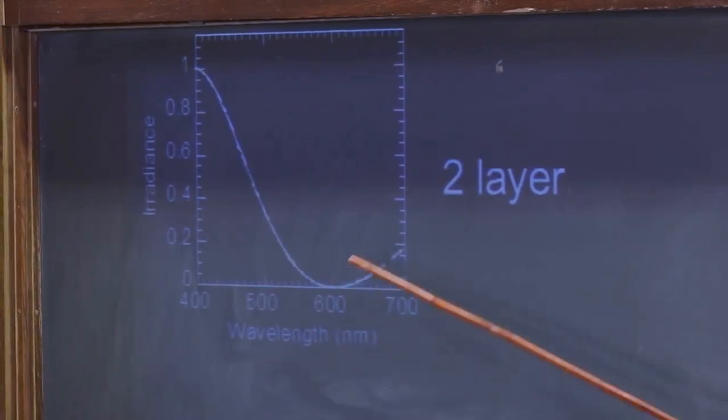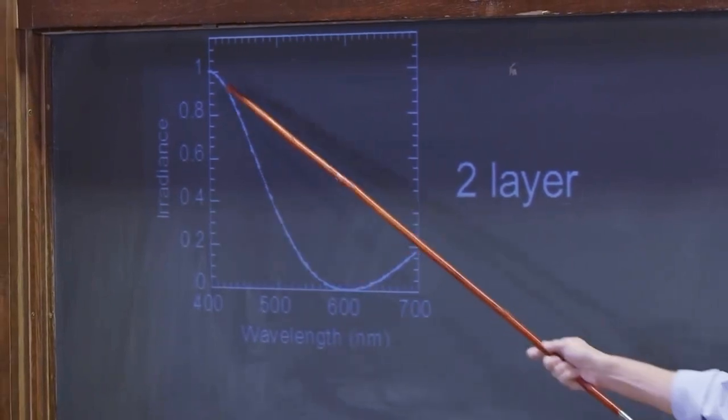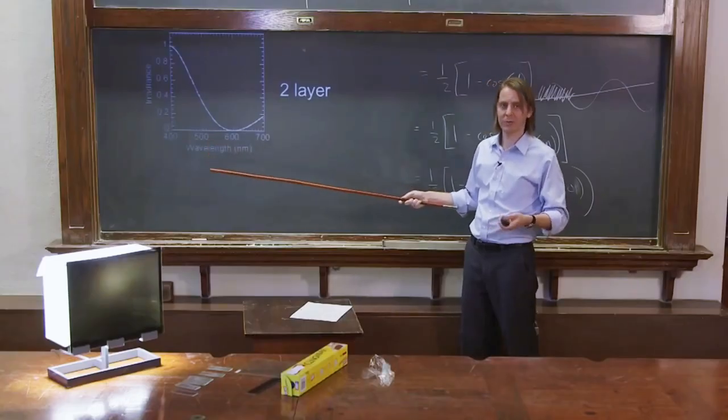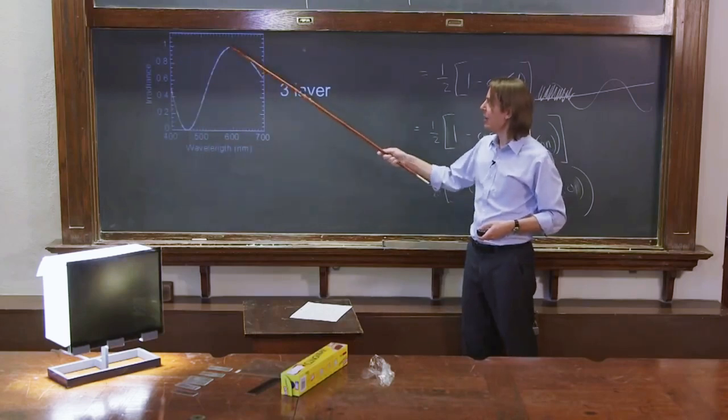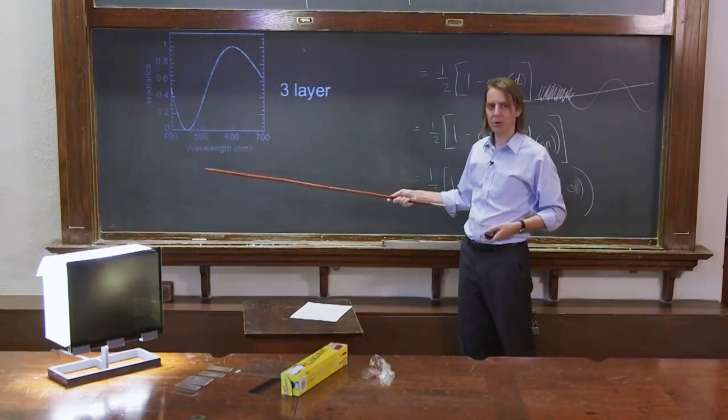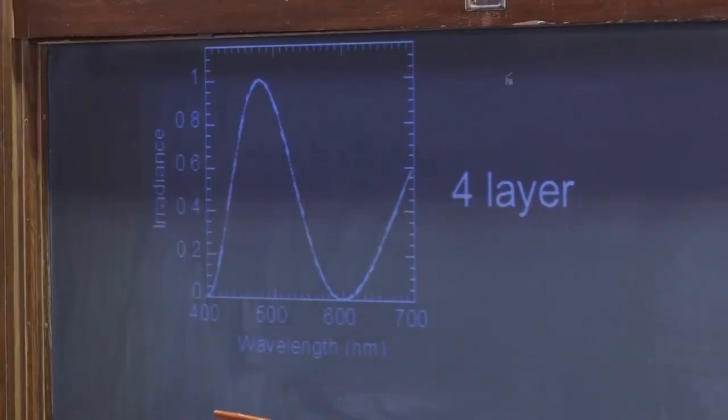Two layers, then you actually get a minimum down here in the red and you get a lot in the blue. So two layers becomes more colorful than one layer. And that's what we saw. Three layers, you get another peak here in the visible and a dip in the visible. More colors, but a different color. Four layers, more colorful.